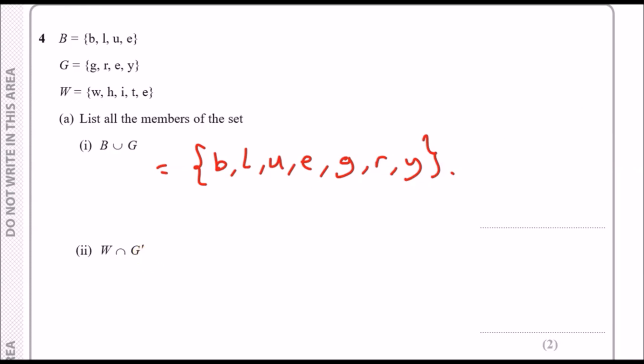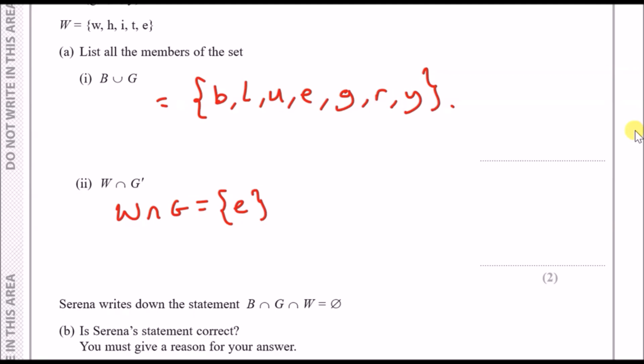What I would do is say okay, the result is going to be b, l, u, e and they also have a g and r but I'm not going to repeat the e and a y. You just literally list every single letter in both sets. For the second part we need to find the members of the set which intersect between W and not G. To understand not G it's better to firstly work out what is the intersection between W and G.